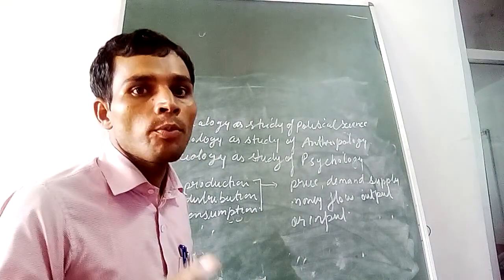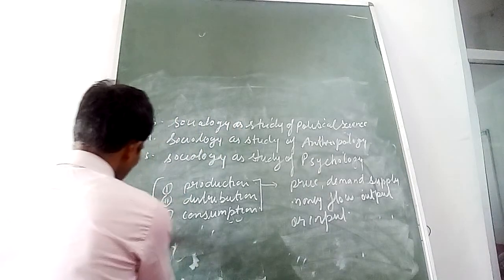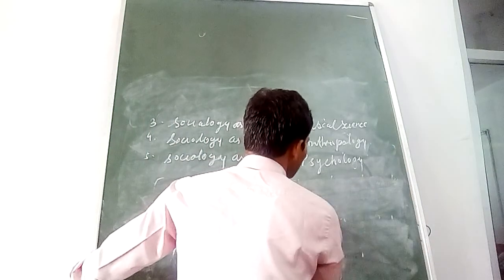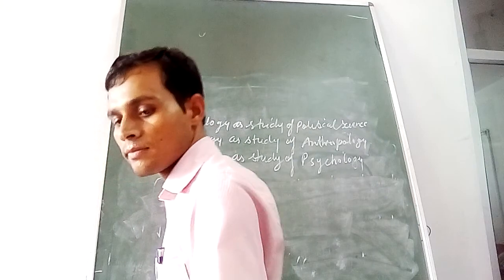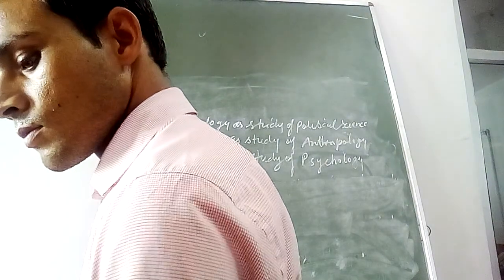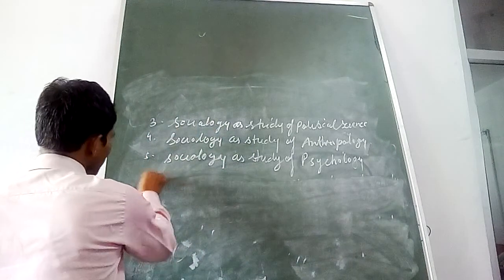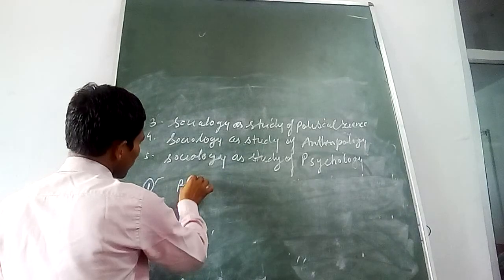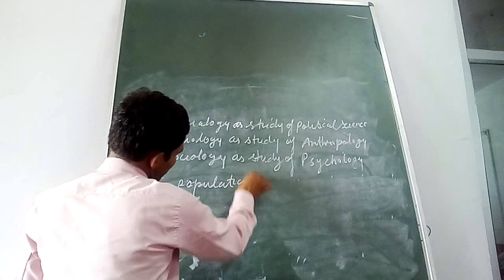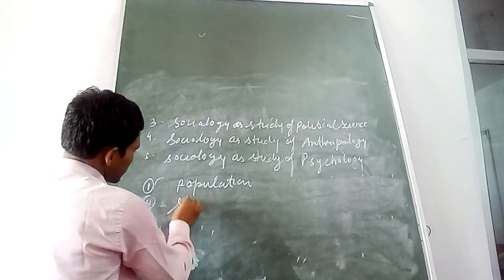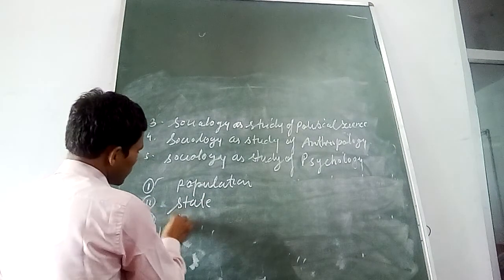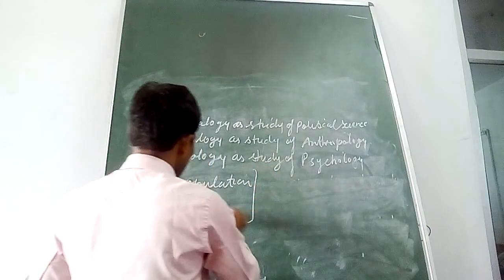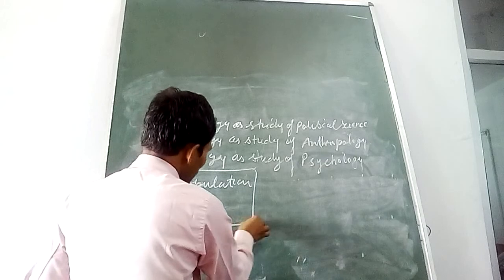Sociology as study of political science — there are three parts of political science. First is people or the population, second is the state, and third is the government. These are the elements included in the political sense.